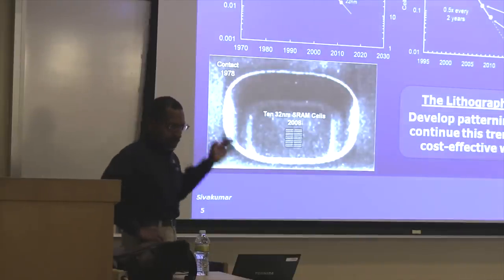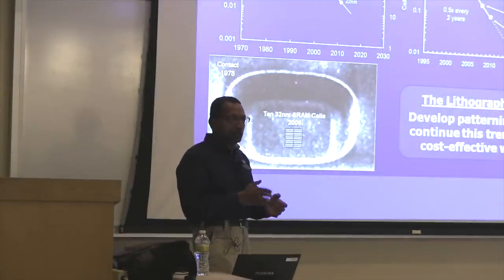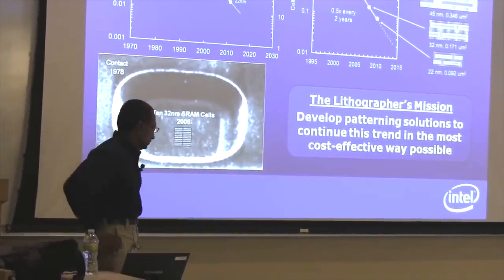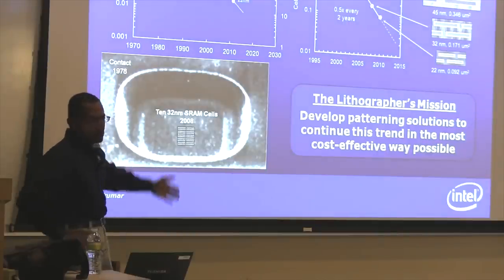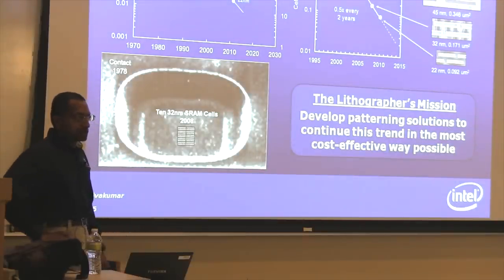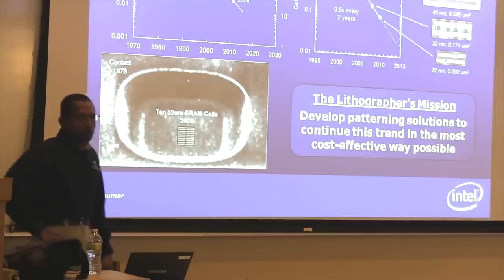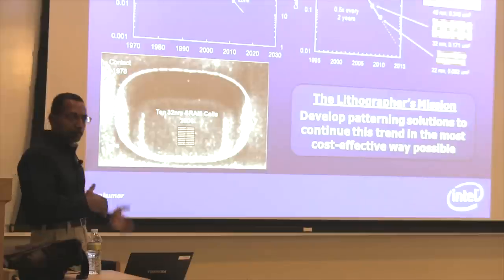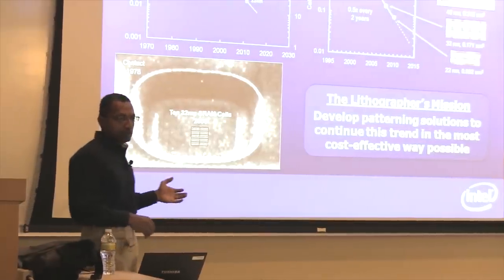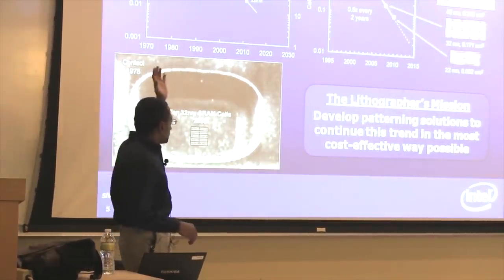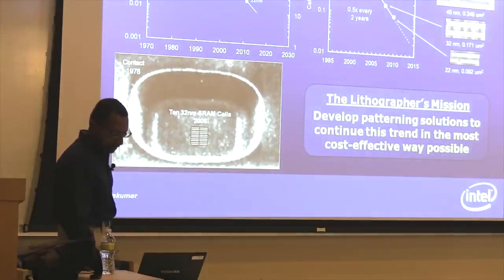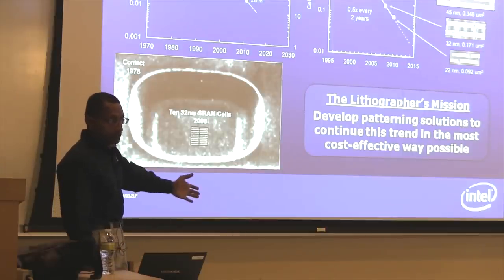From a lithography standpoint, in order to make things smaller, a lot of things need to happen. Electrically, your transistor has to get smaller, and you have to understand how resistance and capacitance of your wires change over process generations. The lithographer's goal is to develop patterning solutions to continue this trend in the most cost-effective way possible. Lithography is the most expensive process step in the fab — estimates go from 40 to 50 percent of the total cost of making a chip. So the lithographer's mission is not just to figure out technically how to make things smaller, but how to do it cheaply.